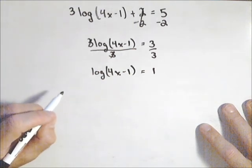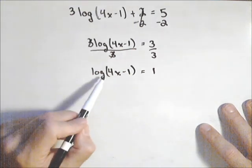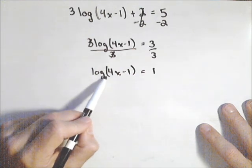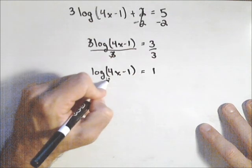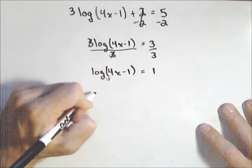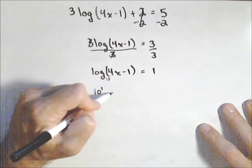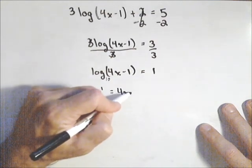Now we've isolated the log piece, we wanna rewrite this as an exponential. And if there's no base written, it's automatically base 10. So base 10 is the base of our exponential, so we have 10 to the first equals four x minus one.